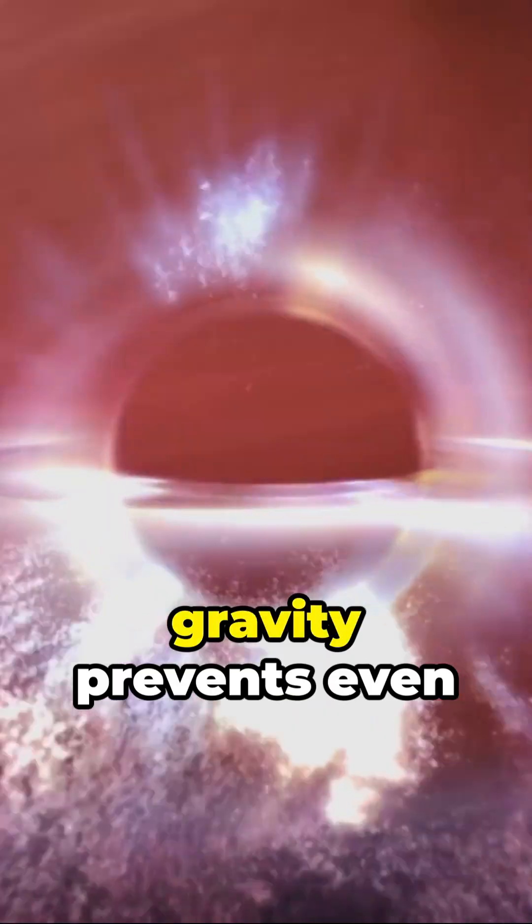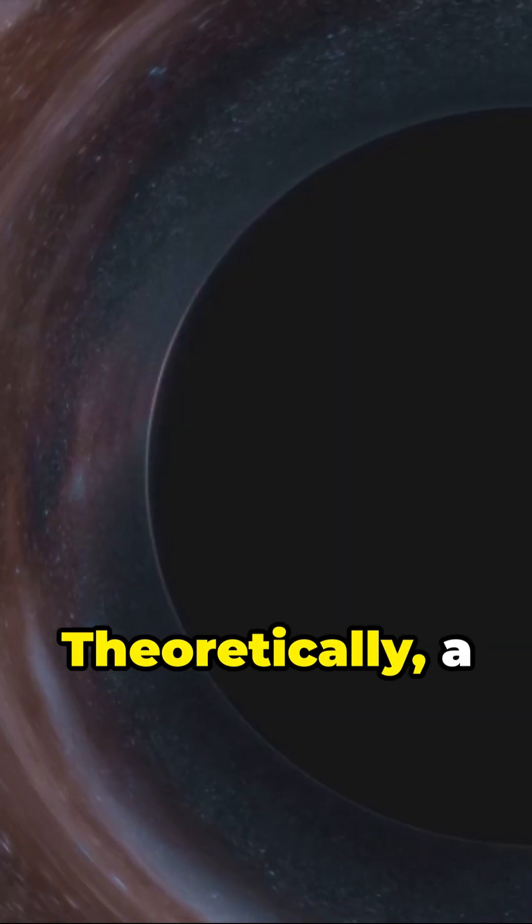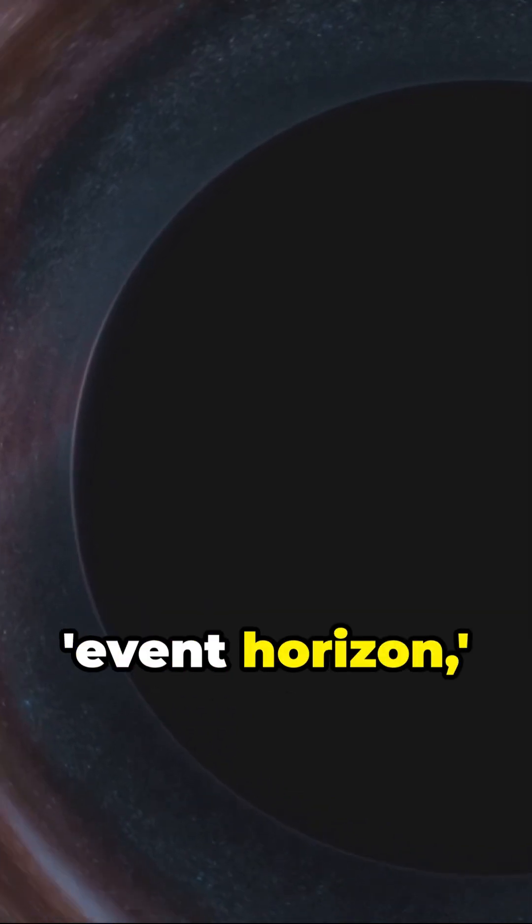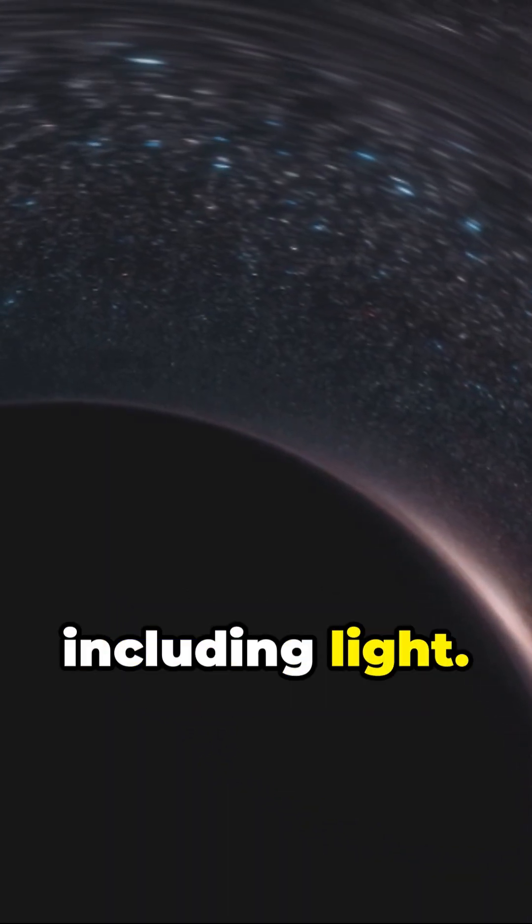Black holes are mysterious cosmic objects whose immense gravity prevents even light from escaping. Theoretically, a black hole has a point known as the event horizon, where its gravity is so strong that it absorbs everything, including light.